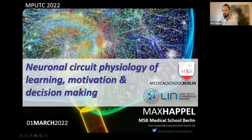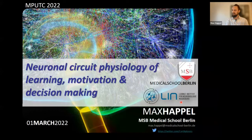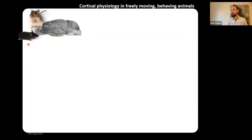What I'm going to talk about today is the Neuronal Circuit Physiology of Learning, Motivation, and Decision Making. That's basically an overview of our research done over the last years at the Leibniz Institute in Magdeburg, Germany. As Micha pointed out, I'm currently also establishing my lab at the Medical School in Berlin. We are interested in cortical physiology in rodents, in freely moving behaving animals.